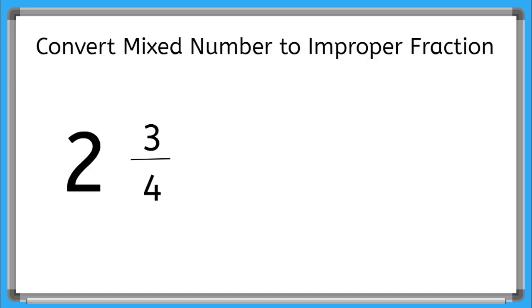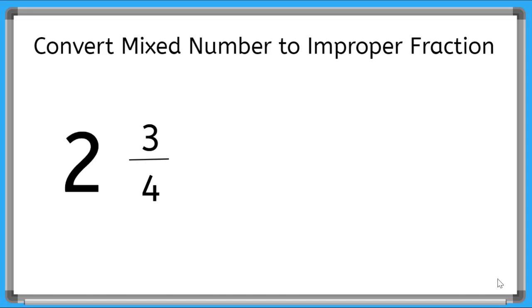We can convert mixed numbers to improper fractions pretty easily, but there are a few steps. The first step is we take our whole number and multiply it by our denominator. So in this case, we get 2 times 4 equals 8.